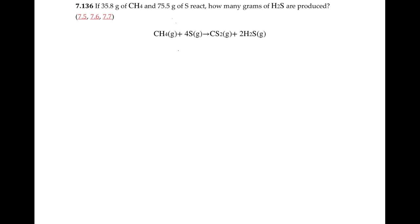Luckily, this chemical equation is balanced for us already, so there's no work to do in that regard. We have 35.8 grams of methane and 75.5 grams of sulfur, and the question is how many grams of hydrogen sulfide are we going to produce?